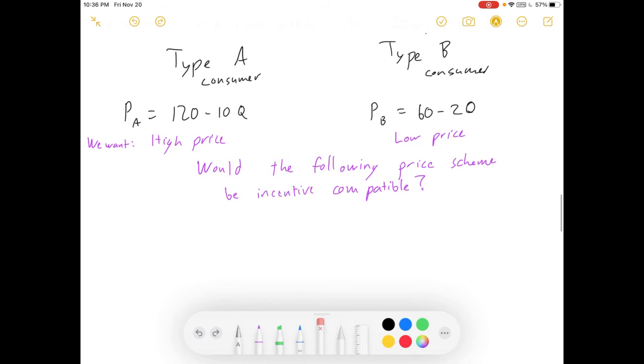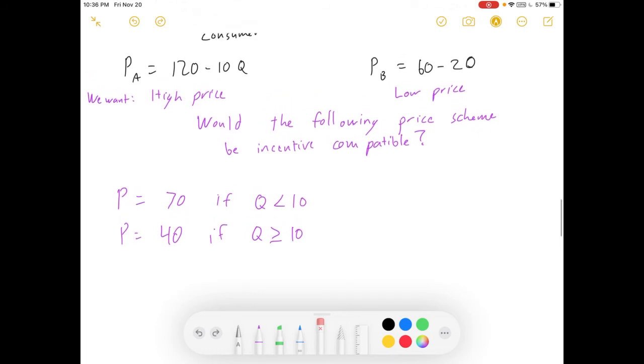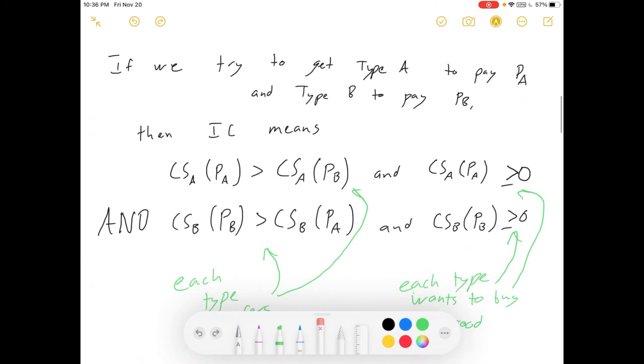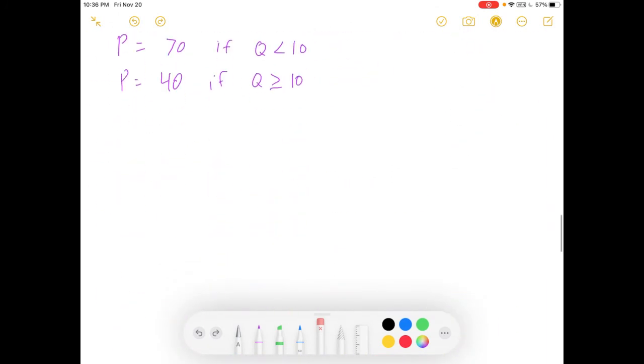We want this person to pay the high price and that person to pay the low price. So, here's just a question. Would the following price scheme be incentive compatible? Price is 70 if Q is less than 10. Price is 40, if Q is greater than or equal to 10. Remember all those constraints we listed up here? Yeah, we're basically going to do that now. We've got a lot of solving to do.